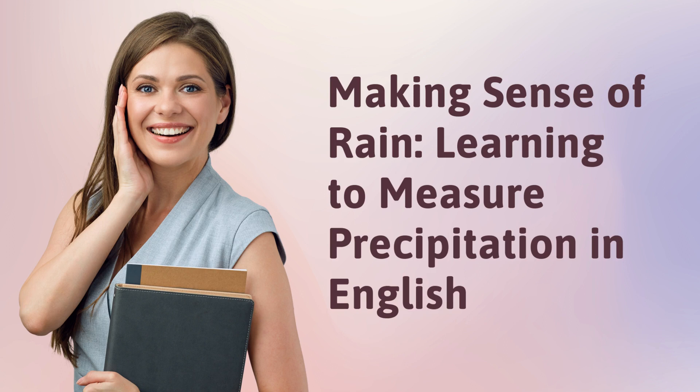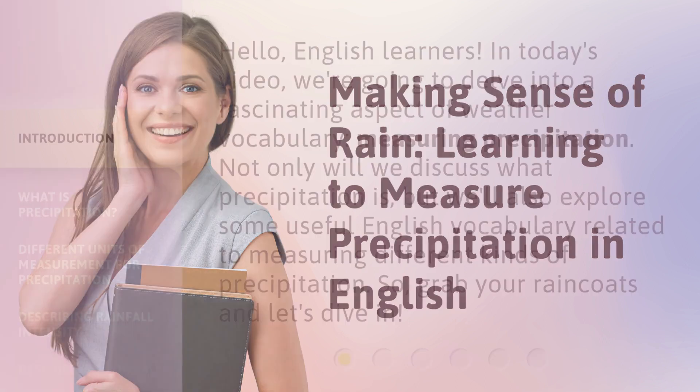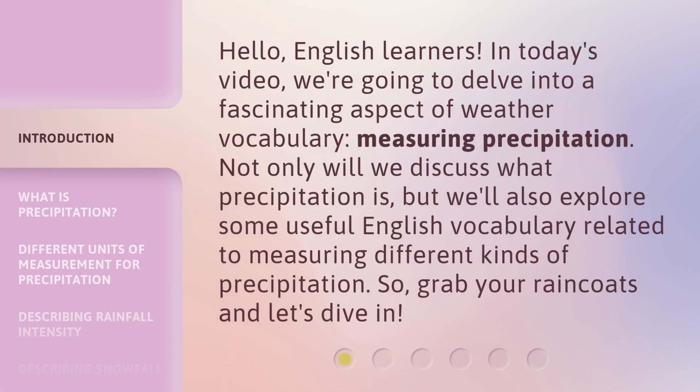Making Sense of Rain: Learning to Measure Precipitation in English. Hello, English learners. In today's video, we're going to delve into a fascinating aspect of weather vocabulary — Measuring Precipitation. Not only will we discuss what precipitation is, but we'll also explore some useful English vocabulary related to measuring different kinds of precipitation. So grab your raincoats and let's dive in.